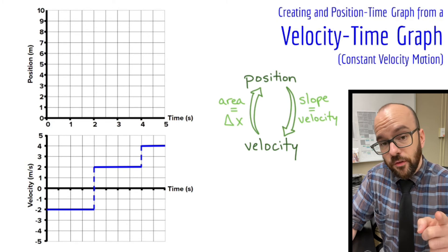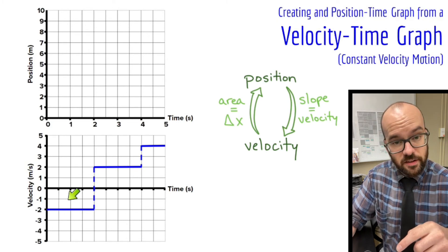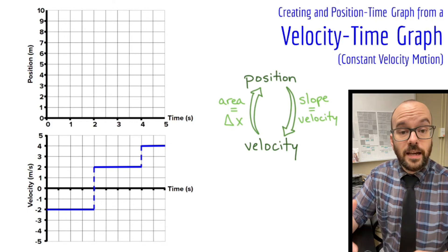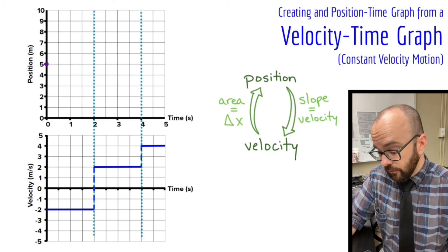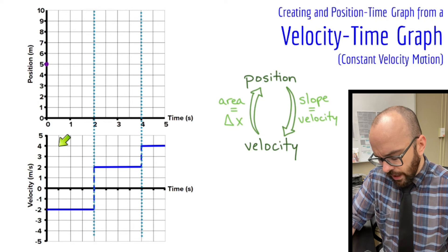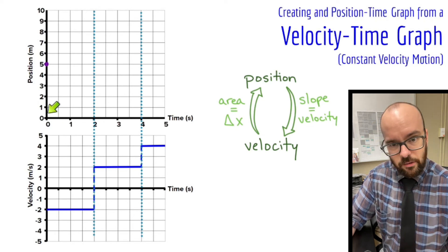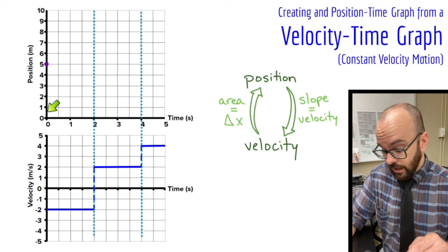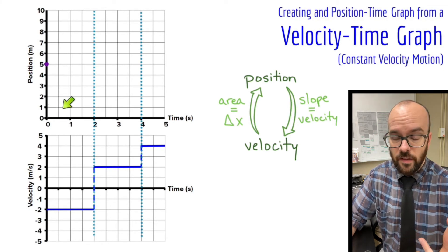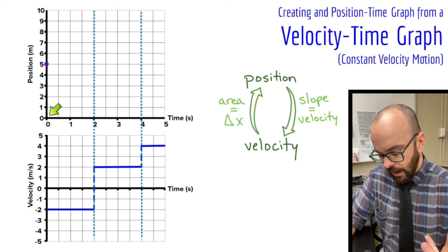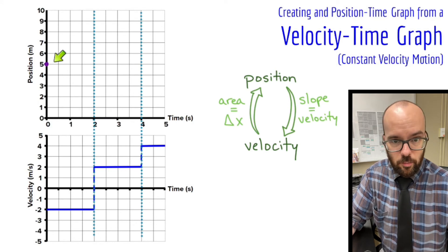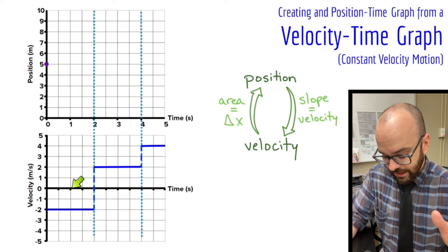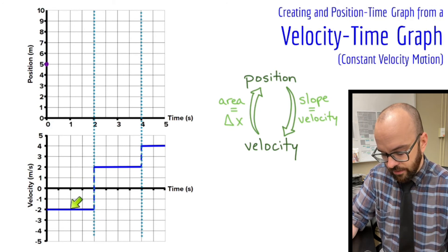Let's jump to a second example. We're going to deal with some negative velocities, so I want to point out some things. Again, I'll divide each interval with a dotted line to line up the position and velocity graphs. In the first interval, I have a negative velocity. I don't want to start at position zero because moving in the negative direction would take the object off my graph, so I'll pick a starting position of five meters. I'll shade from the horizontal axis down to the velocity line.